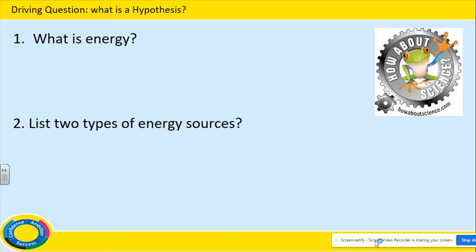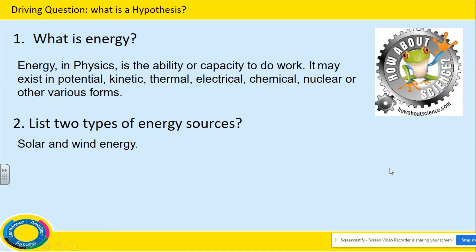Are you finished? Let's go. Question one: what is energy? Energy in physics is the ability or capacity to do work. It may exist in potential, kinetic, thermal, electrical, chemical, nuclear, or other various forms. Question two, list two types of energy sources. We have solar energy and wind energy.